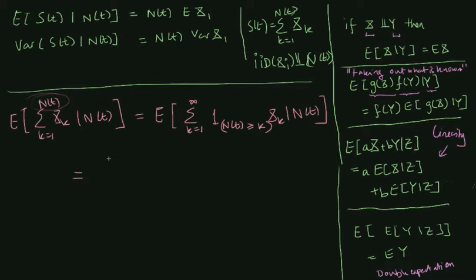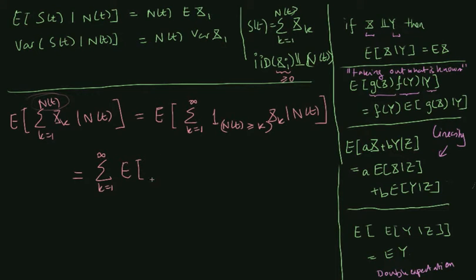Now that we have taken N(t) inside the sum, we can comfortably interchange the sum and expectation since conditional expectation is linear. Another reason we can do this even with an infinite sum is that the X_k's are all greater than or equal to zero — we use them to model claim sizes — so Tonelli's theorem allows us to interchange the conditional expectation and the sum.